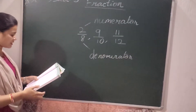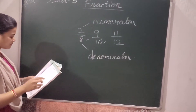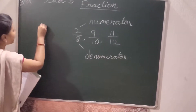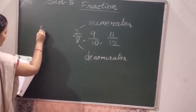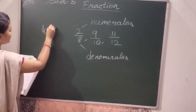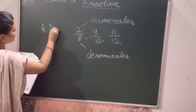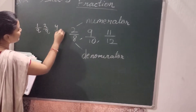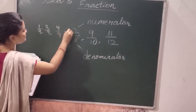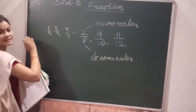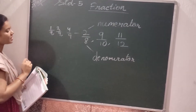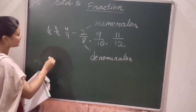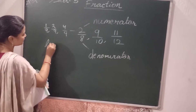Some fractions like 1 by 9, 2 by 9, 4 by 9 — in this case the denominators are the same. So this type of fraction is called a like fraction.